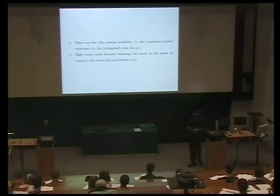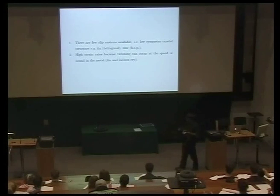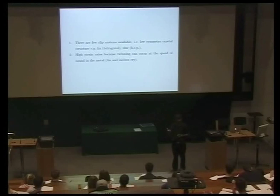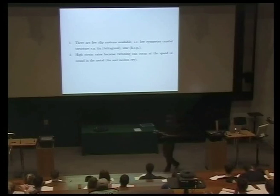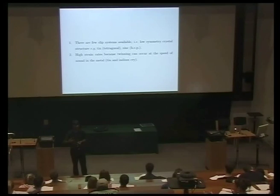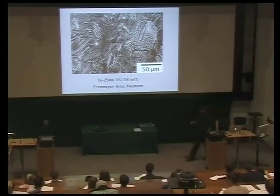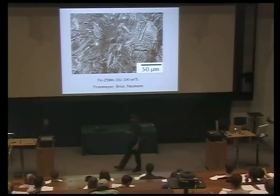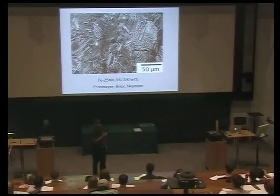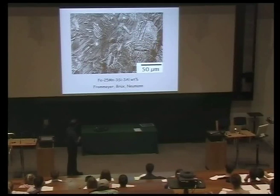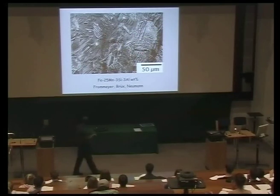Mechanical twinning tends to happen in systems where there are few slip systems available — zinc is hexagonal close-packed, tin is tetragonal, indium is also tetragonal I. Twinning occurs at high strain rates because it can happen very, very rapidly; the speed of sound in a metal is typically about 5,000 meters per second, so it can easily accommodate that sort of strain rate. We can actually design a steel so that instead of slipping, it will deform by twinning.